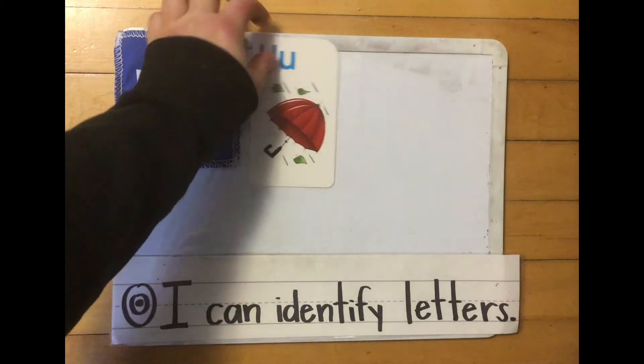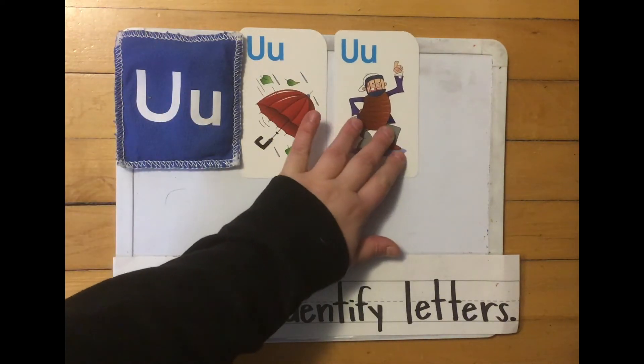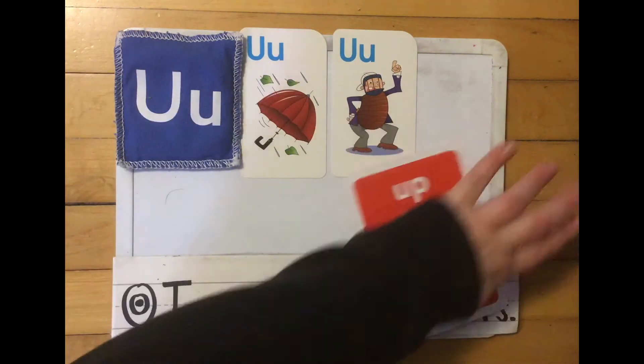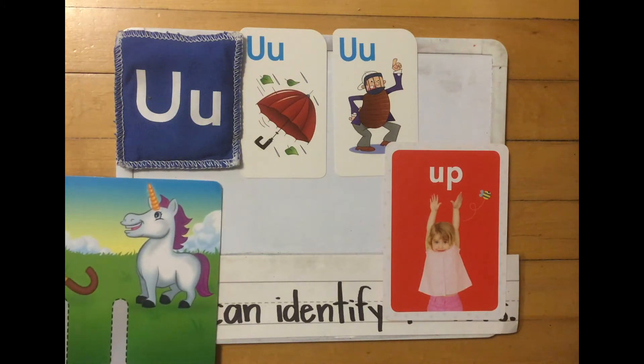U is for umbrella, U is for umpire, U is for up, and U is for unicorn.